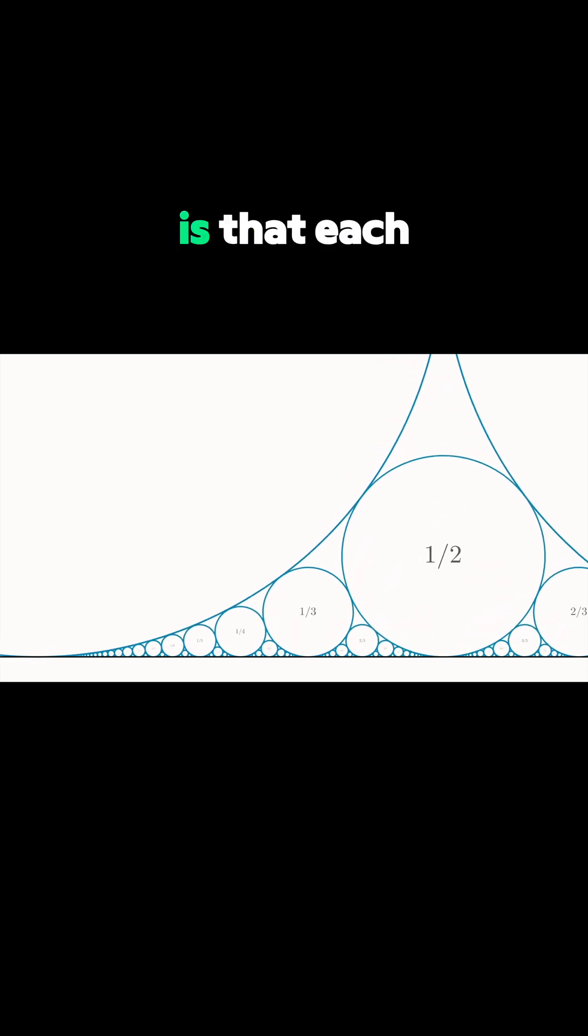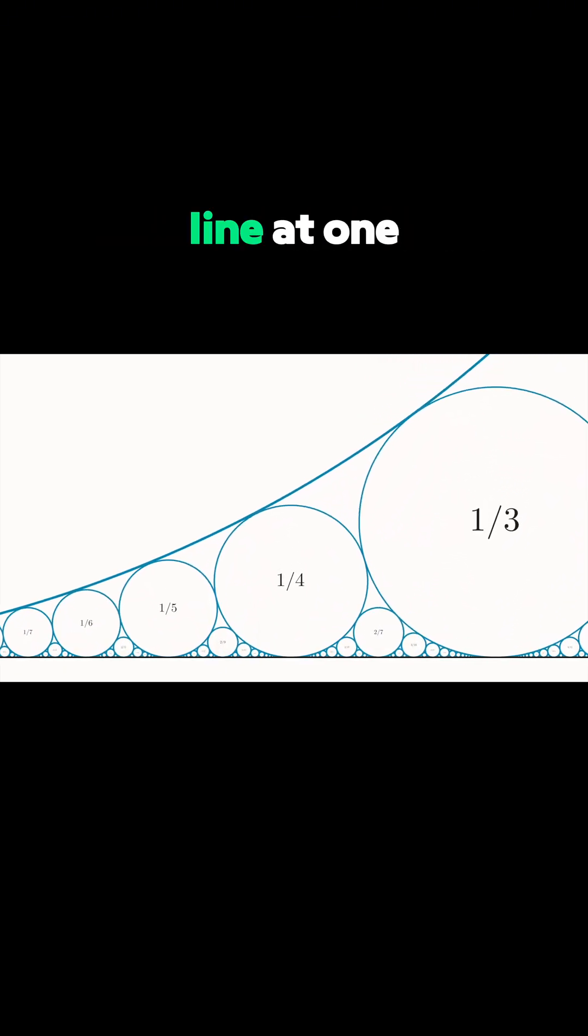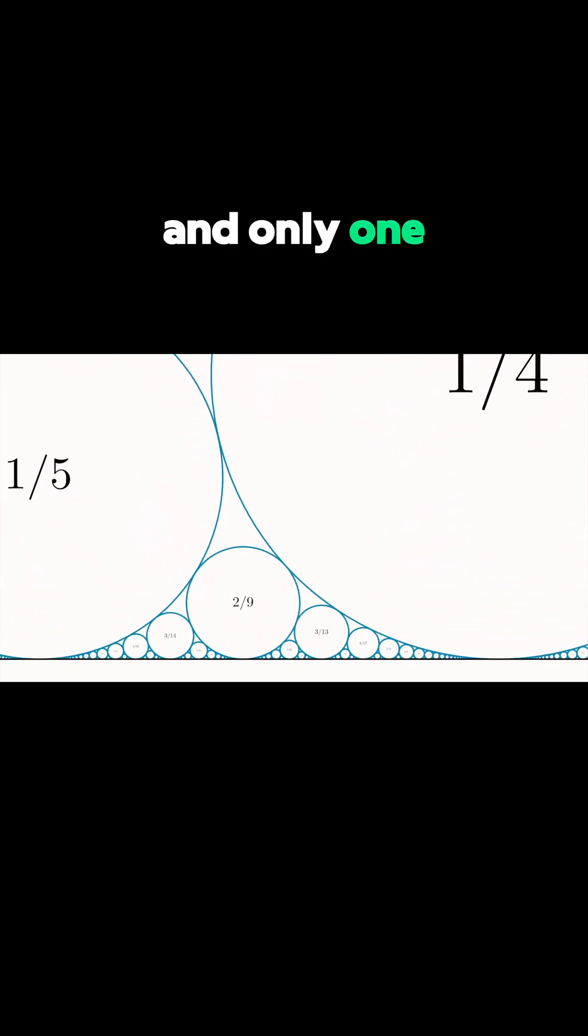The most amazing thing about this is that each circle always touches the line at one and only one rational point.